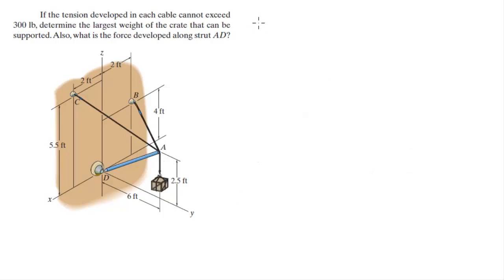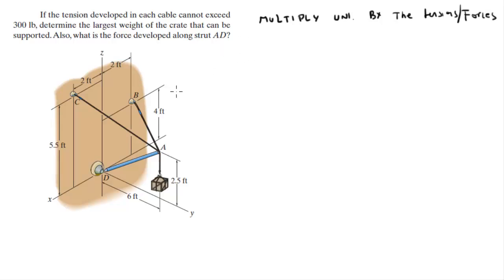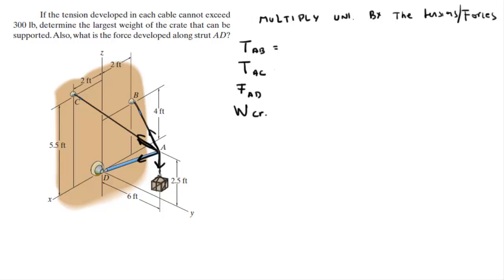Now that you have the unit vectors, all you need to do is multiply each unit vector by its corresponding tension or force. We have: tension in AB, tension in AC, force in rod AD, and the tension for the crate — which equals the weight of the crate. That gives us four forces, matching our four unit vectors.